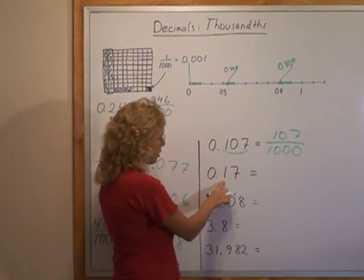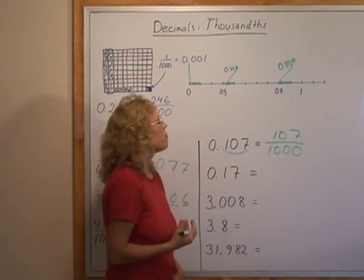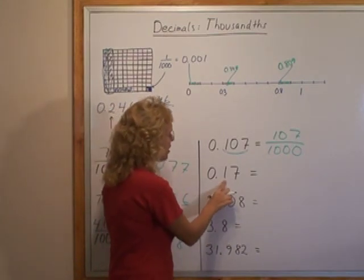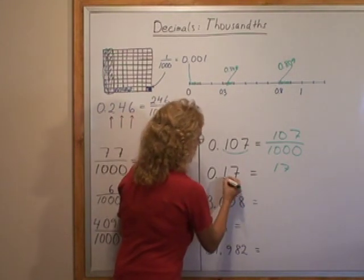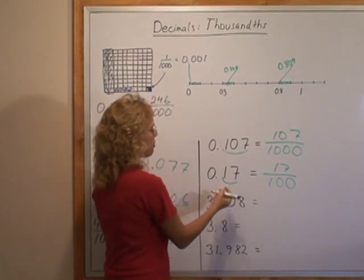Now this here does not have three decimal digits, so therefore it's not going to be thousandths, it's going to be, no I'm sorry, hundredths. Okay, here's tenths, here's hundredths. But together we can read it as seventeen and then the denominator is hundred because of these two decimal digits.